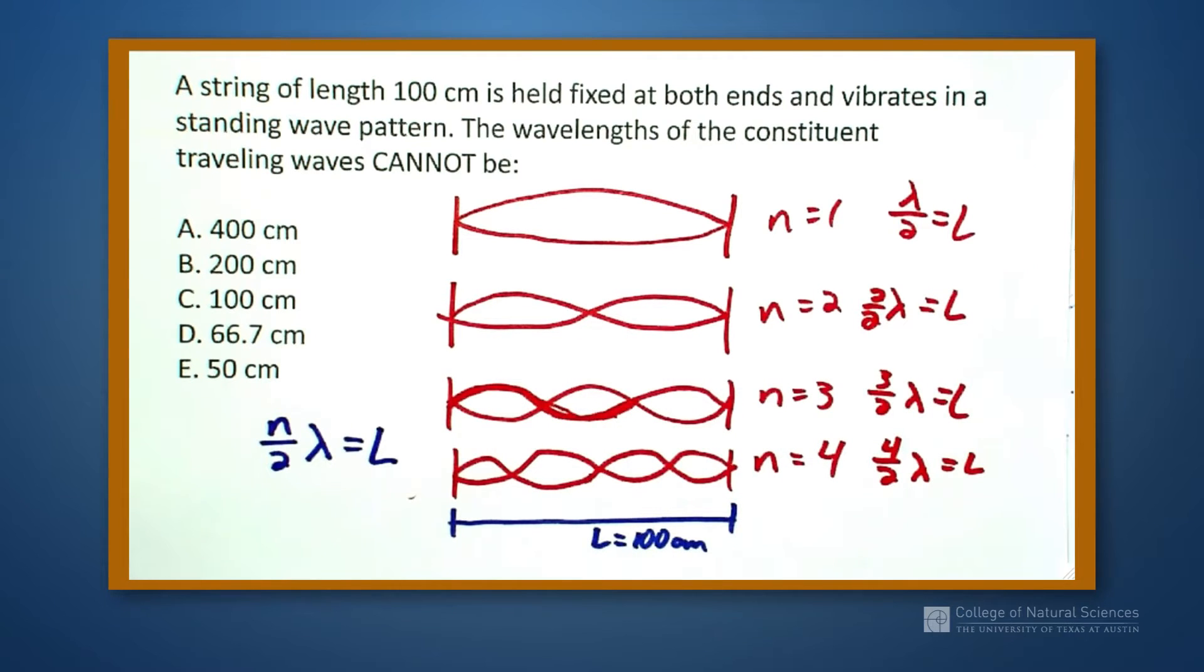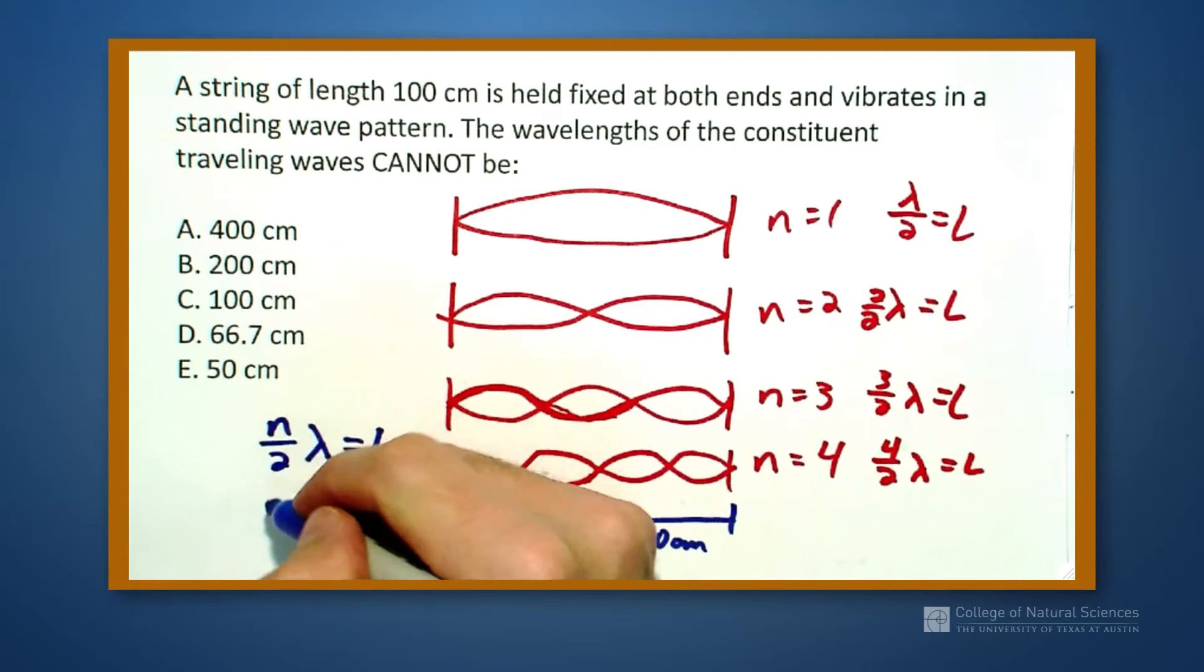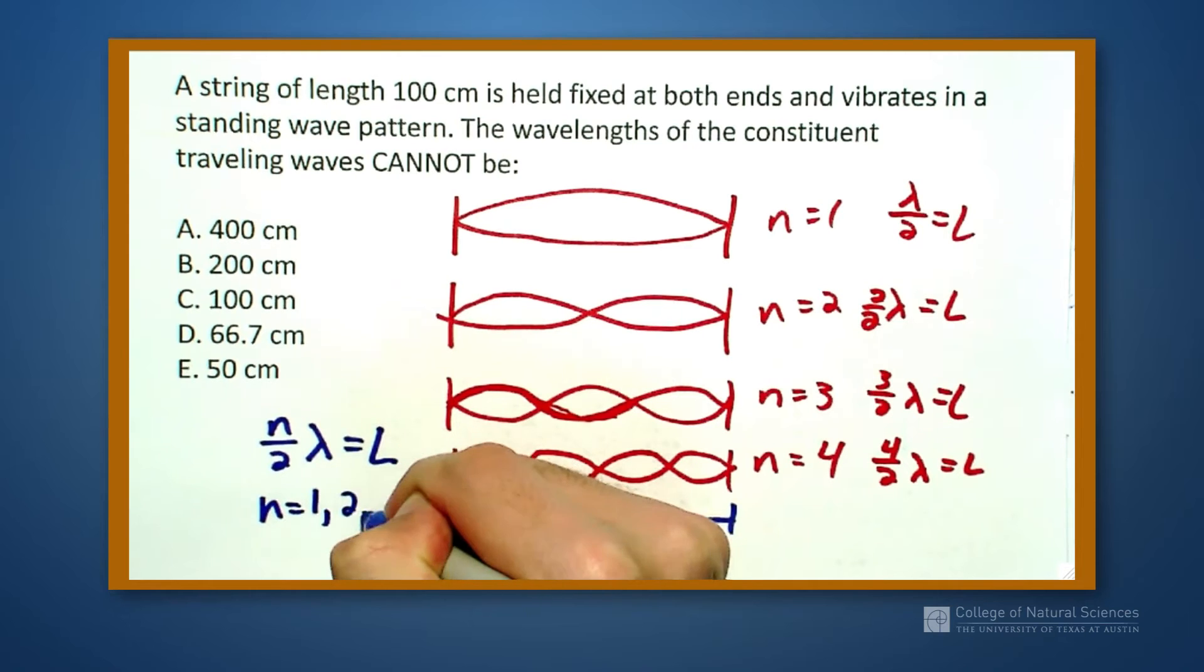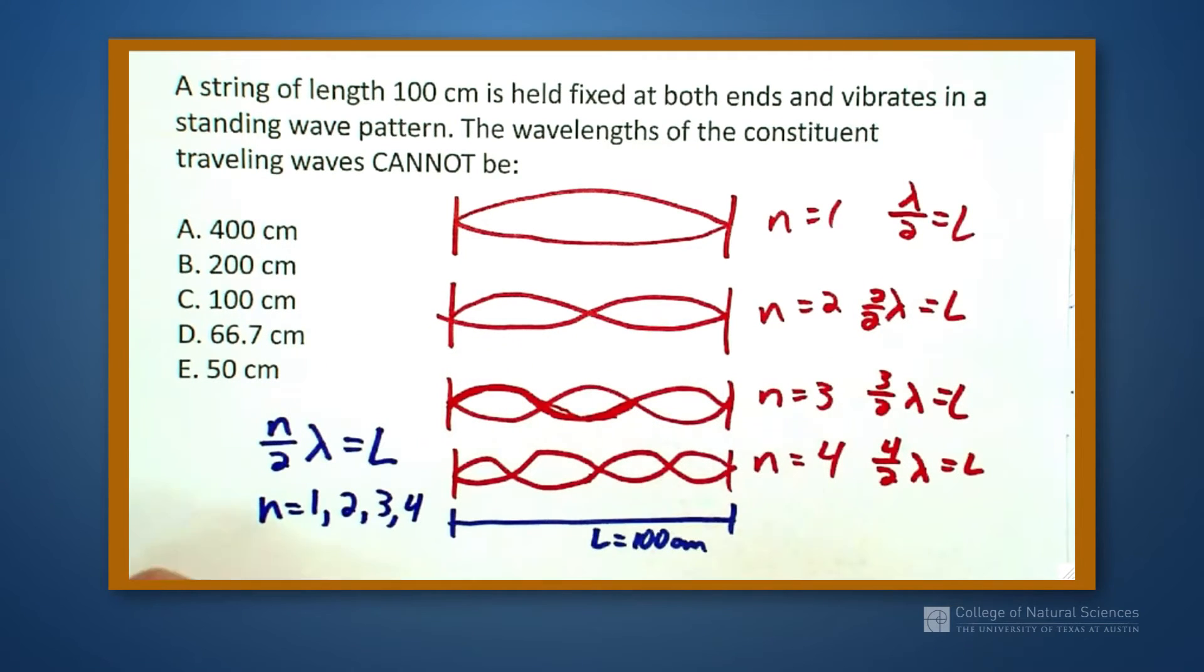So any value of n, oh, so n has to be equal to 1, 2, 3, 4, so on and so forth.